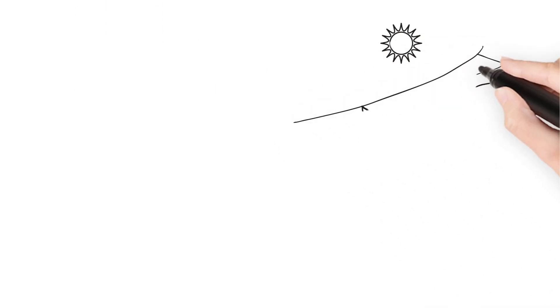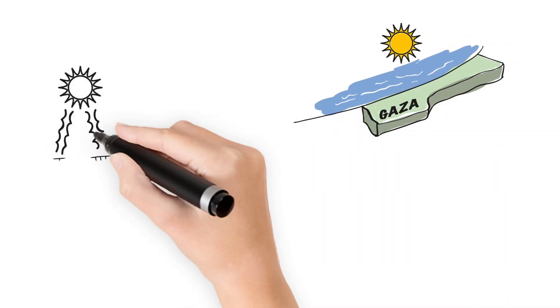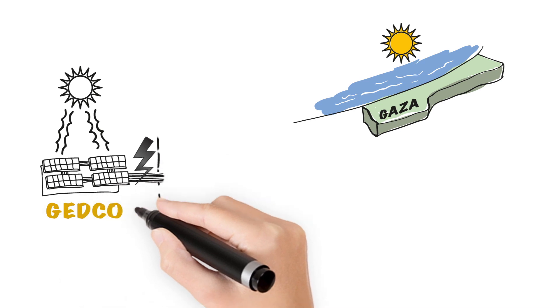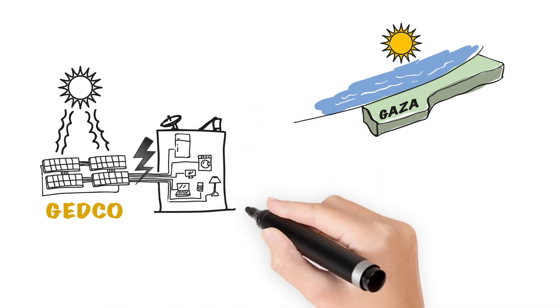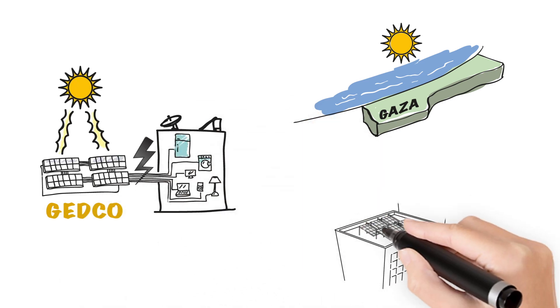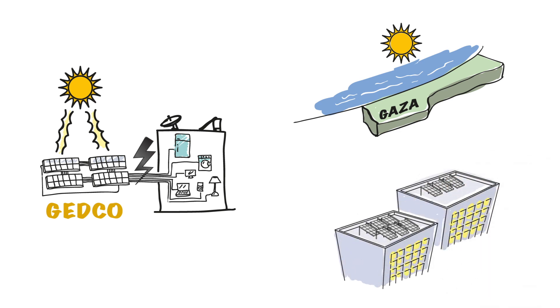A third idea is solar energy. Gaza benefits from sunny days all year long. But until now, solar energy has been an untapped resource. However, rooftop solar panels can be installed on almost every building in Gaza.